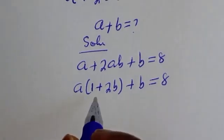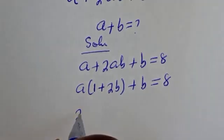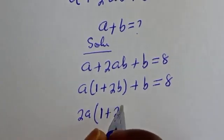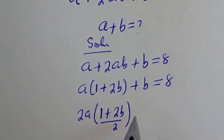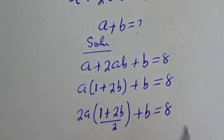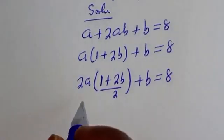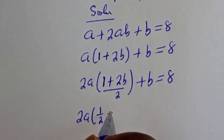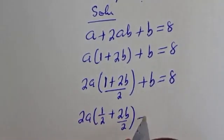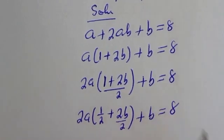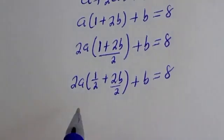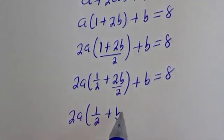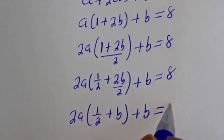Note that if you have 2 divided by 2, that is equal to 1. The left hand side can be written as 2a bracket 1 plus 2b over 2 plus b is equal to 8. Then this is 2a bracket 1 over 2 plus b plus b is equal to 8.